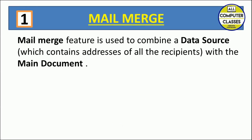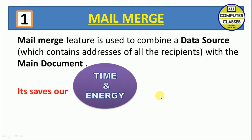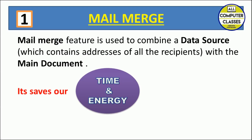First of all, we should know what mail merge is all about. The mail merge feature of Microsoft Word is used to combine two things: the data source and the main document. The data source is the addresses of all the recipients, and the main document is your letter. For example, you are having your birthday next month and you want to invite all your friends — you'll be sending an invitation letter to them. This feature will save our time and energy.